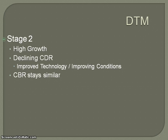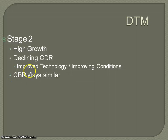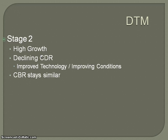Stage two is characterized by high growth because the death rate begins to decline but the birth rates stay similar. The only way the death rate can begin to decline is if the children — the babies that are being born — are surviving. The death rate drops primarily in the younger population. Those children are already born, and as a natural result of their not dying, you're going to have an increase in population. This wide gap between death rates and birth rates results in a high rate of natural increase.